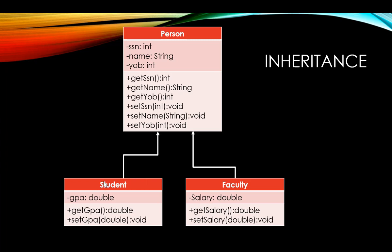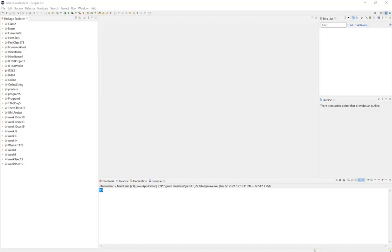If we want to add more types of people to our university — for example staff or donors — they all fall under the category of person, so they can also inherit the methods and variables in the person class. Let's see how we can implement this using Java.